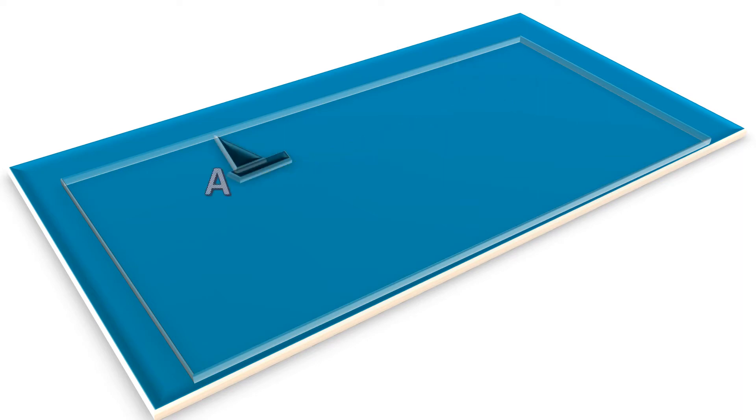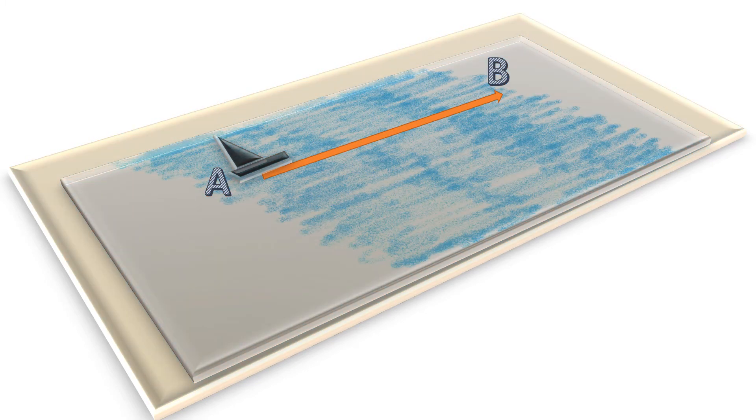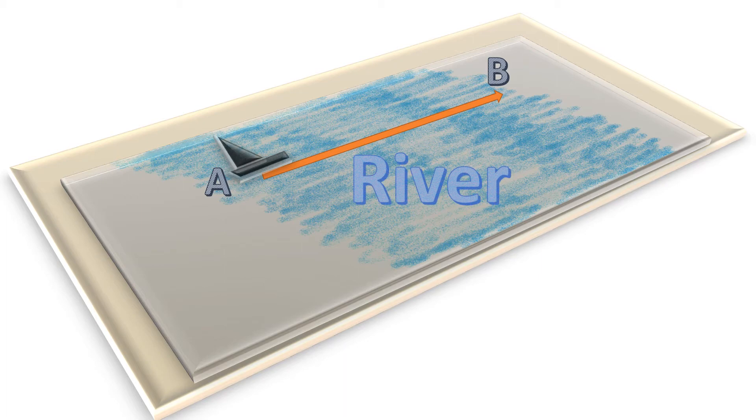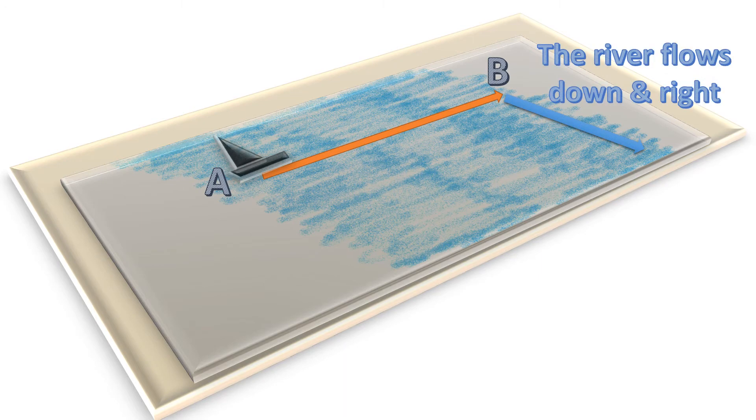Now, let's make things more interesting. We have the same boat with the same trajectory. But, instead of a lake we'll put it in a river. The river is not standing and it flows. On the screen it is directed down and right.